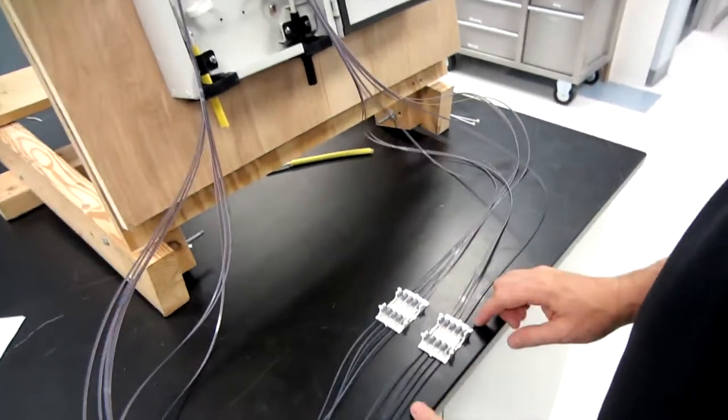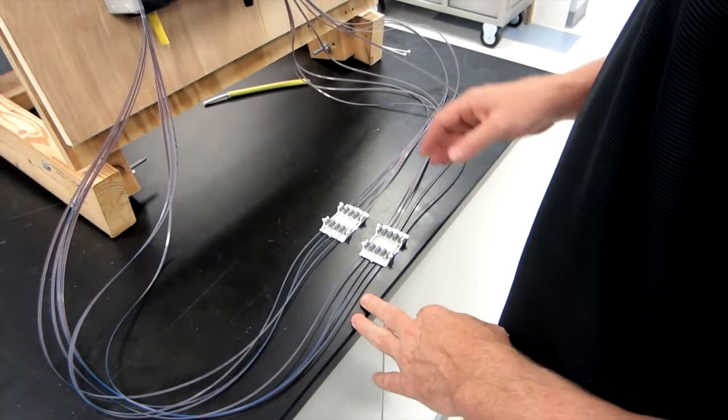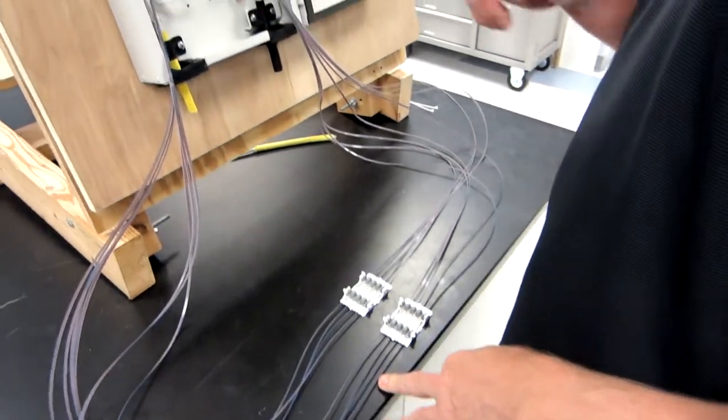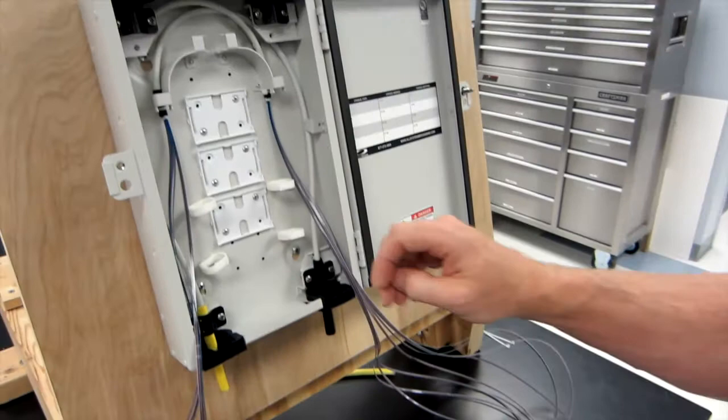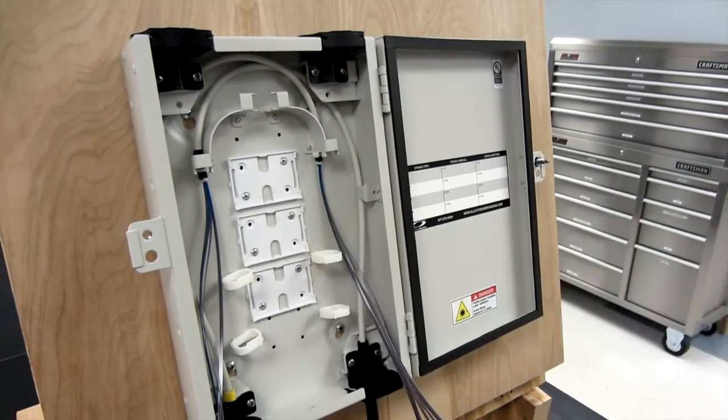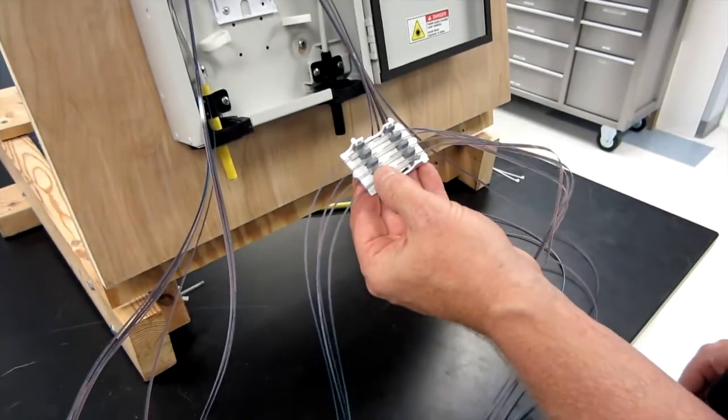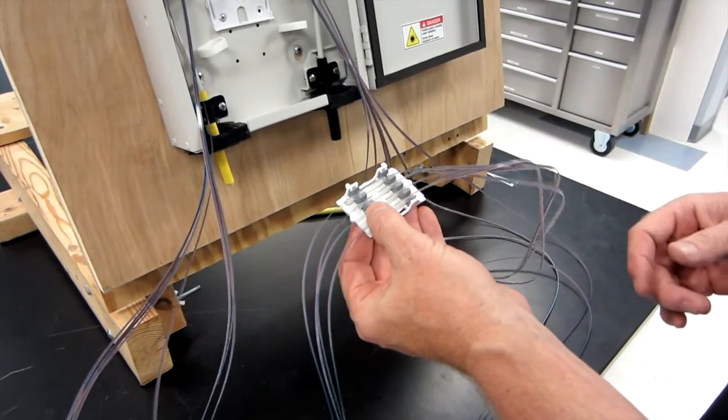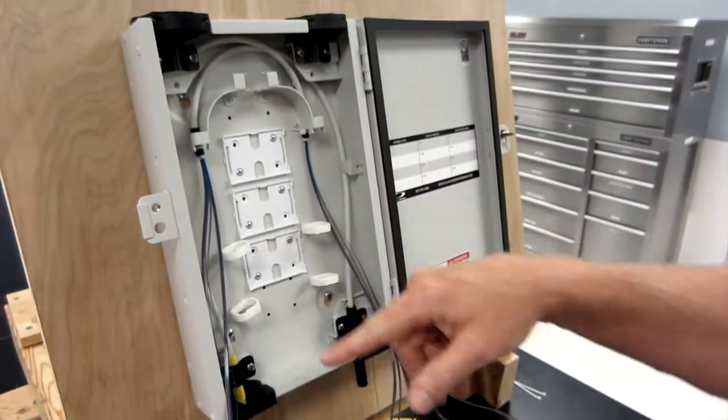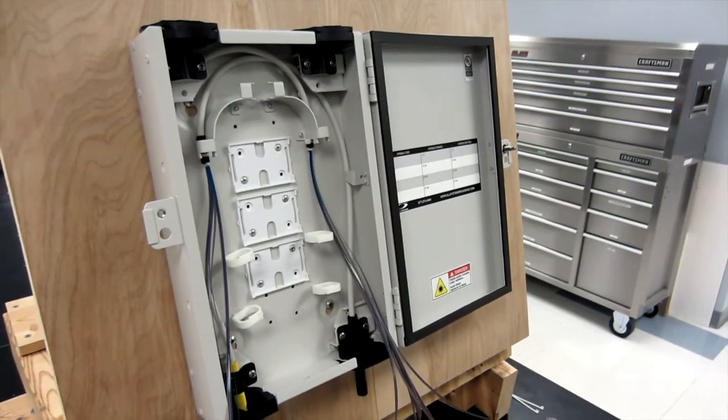All the twists have been taken out and our splices have been made. You can see in this small FSB box we have three cradle adapters. Each cradle holds four ribbons, so that's 48 count. 48 times 3 gives us 144 count capacity for ribbon in this box.